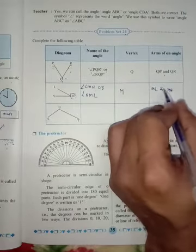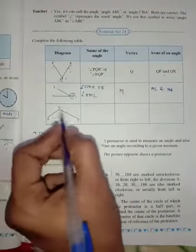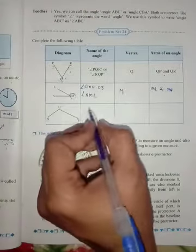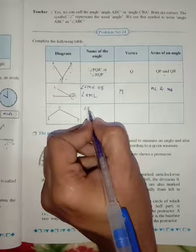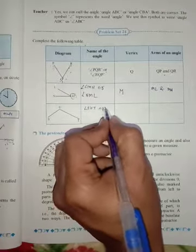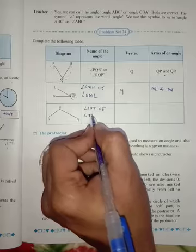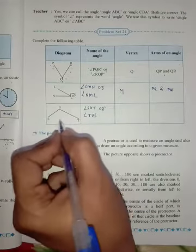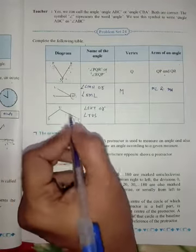Now again, write the name of this angle. So it is angle SUT or angle TUS. You can write anything - SUT or TUS. Okay, both are the same.